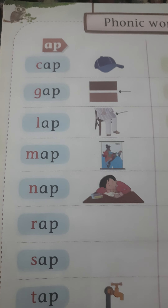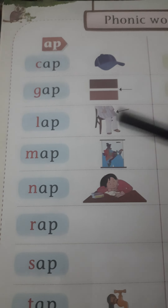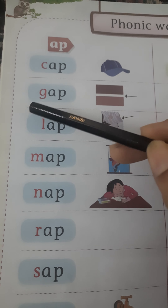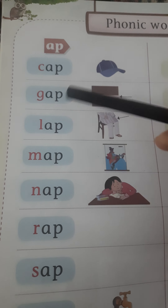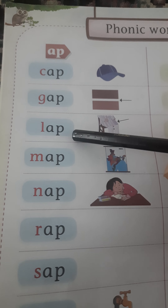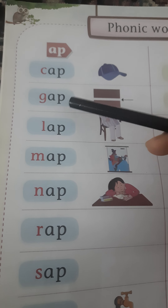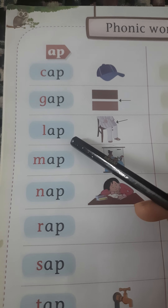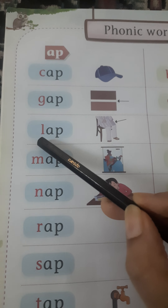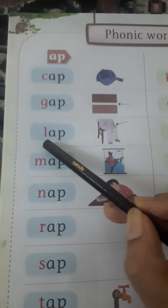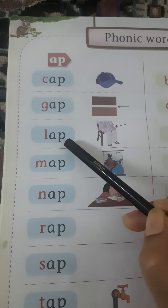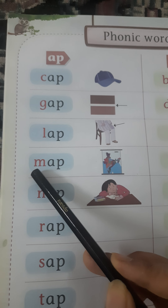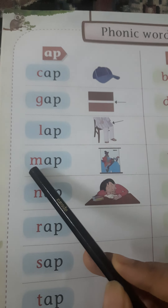Like this: gap, gap. Repeat after me — gap, lap. Because the sound of this is L: app, lap. And this is M — map.